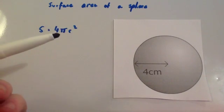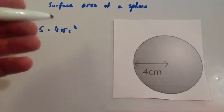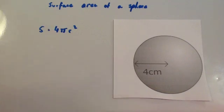So you do 4 times π times whatever the radius is squared. Make sure you're doing your BODMAS, you're squaring your radius first then times it by 4 and by π.